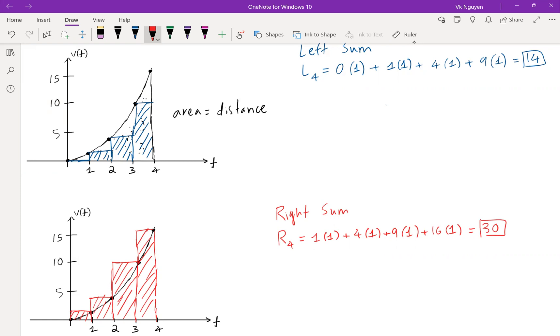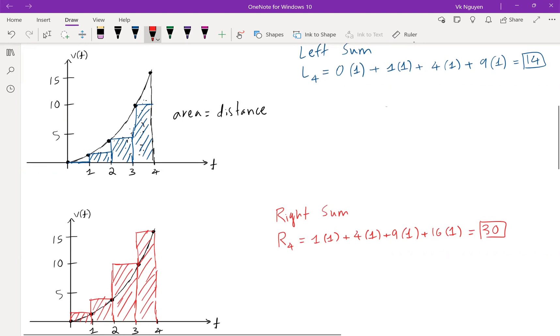If you take a look at the left sum, you will see that the area of the rectangles is much smaller than the right sum. Because the rectangles in the left sum are below the curve, and the rectangles in the right sum are above the curve. So in order to balance out the estimation, we can use the midpoint.